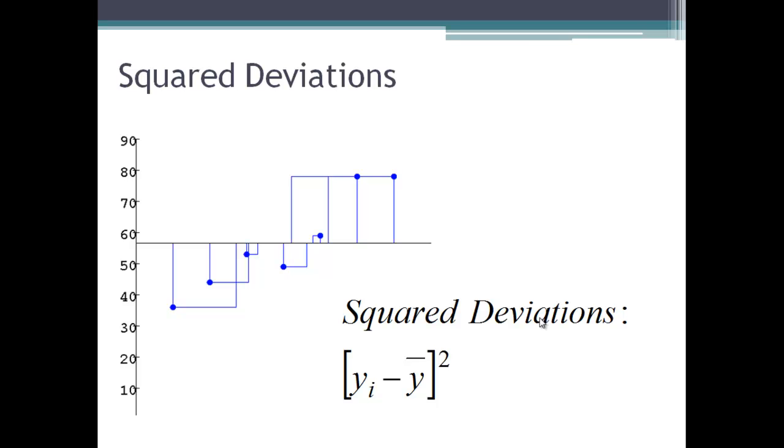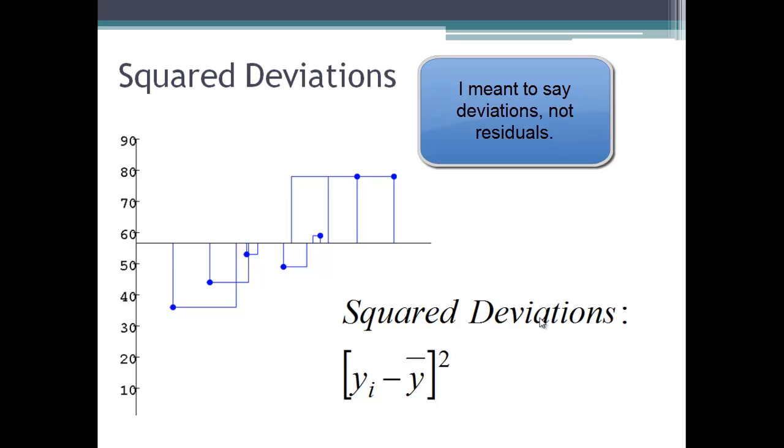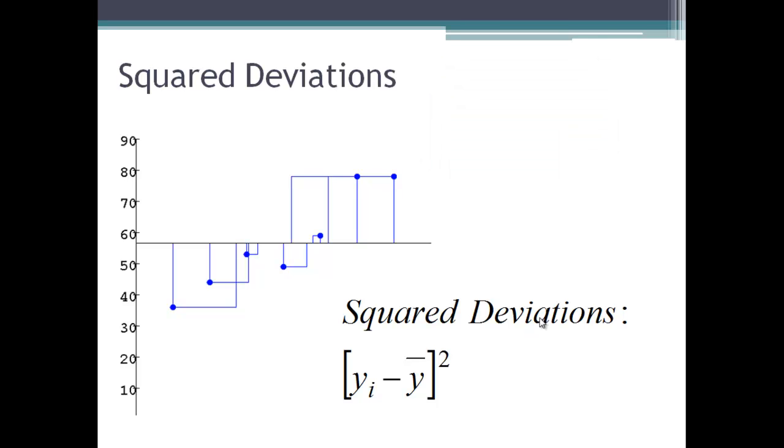Then we square the deviations. This is the next column over. We take the y sub i minus y bar and square it. Now we've taken each one of those deviations and made it into a square. That's just the geometry of what that column of squared deviations would look like.